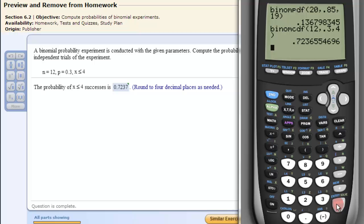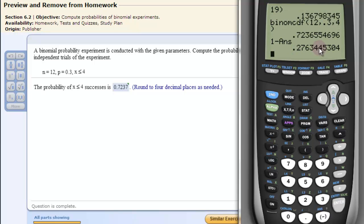The result is .7237. So that's how you find the cumulative probability. Now remember, if you had to find a greater than probability, you'd find the less than, then do 1 minus that answer, and this would be the greater than. So greater than four successes.